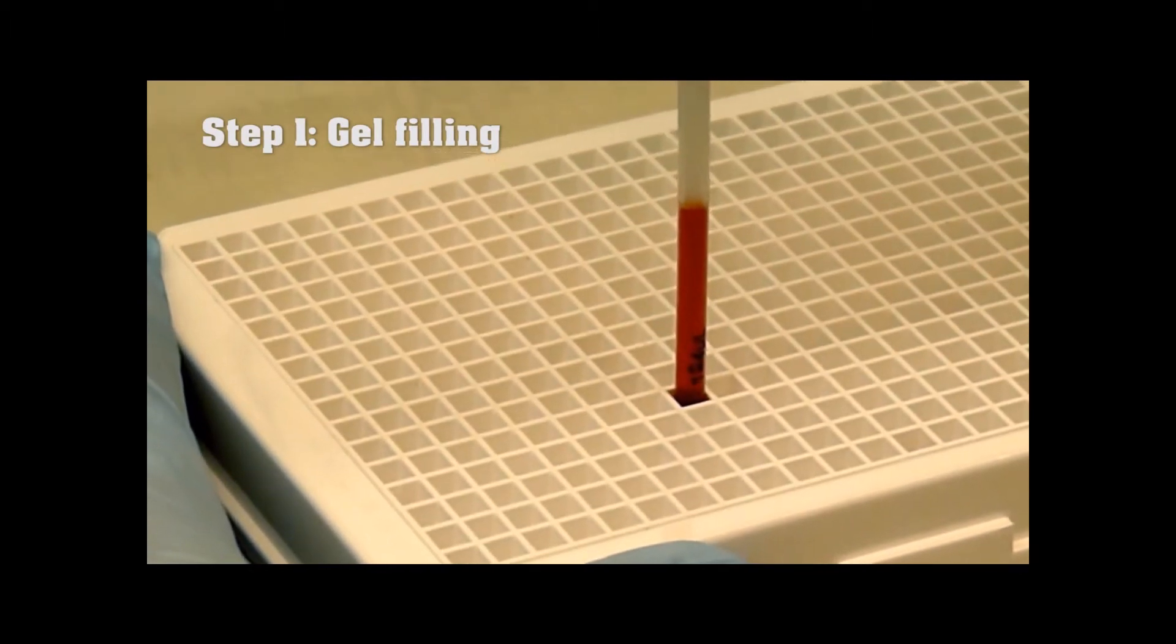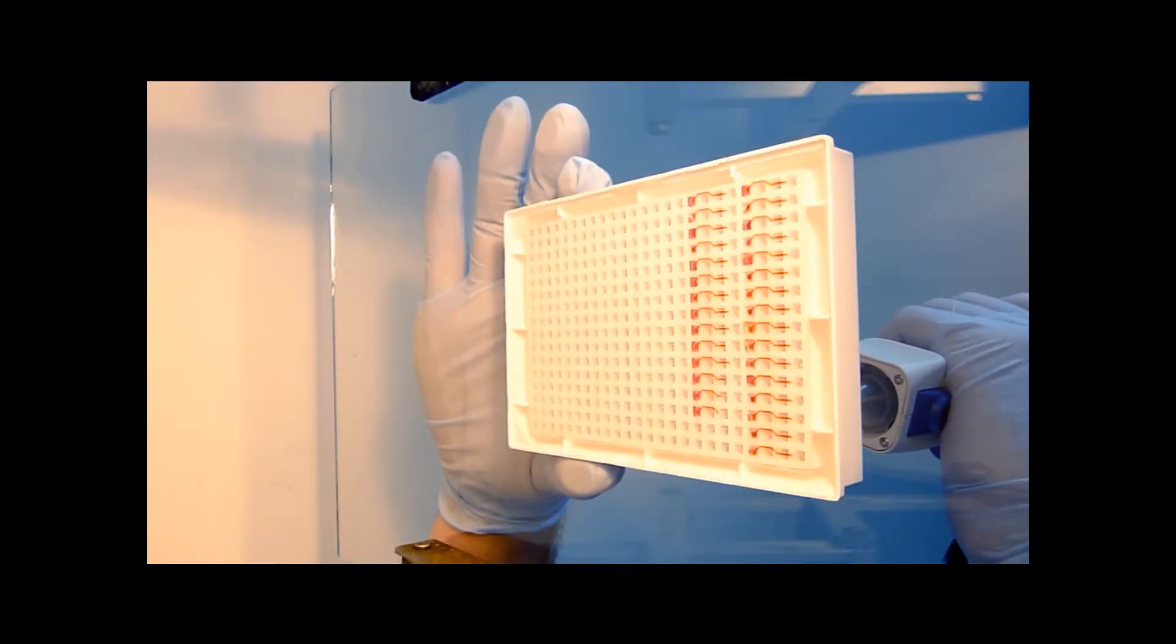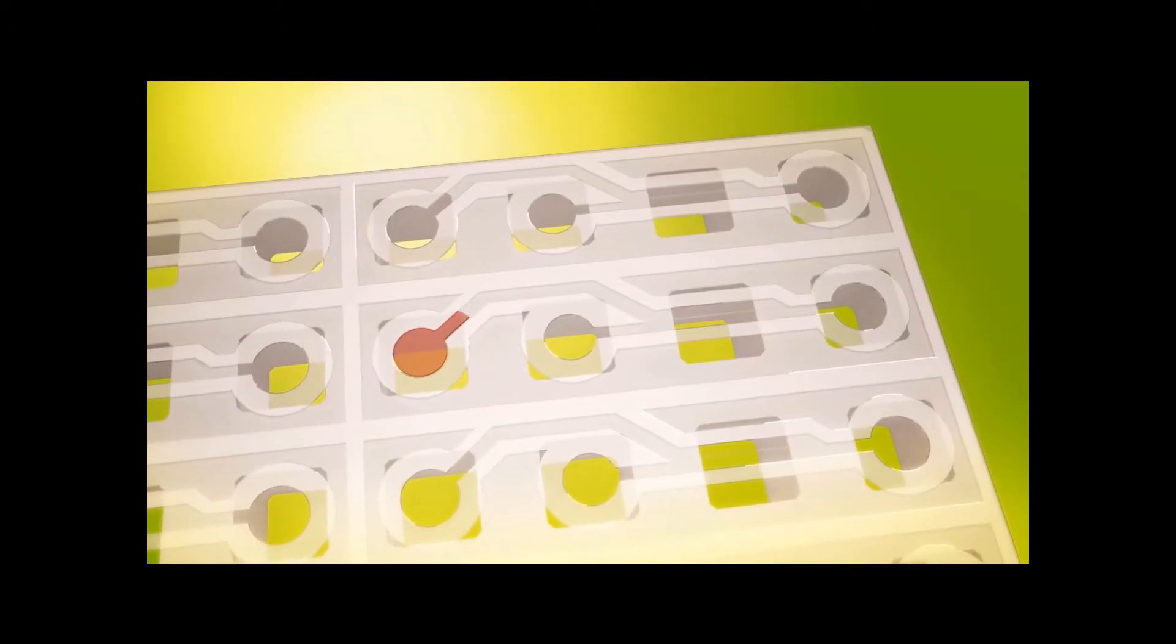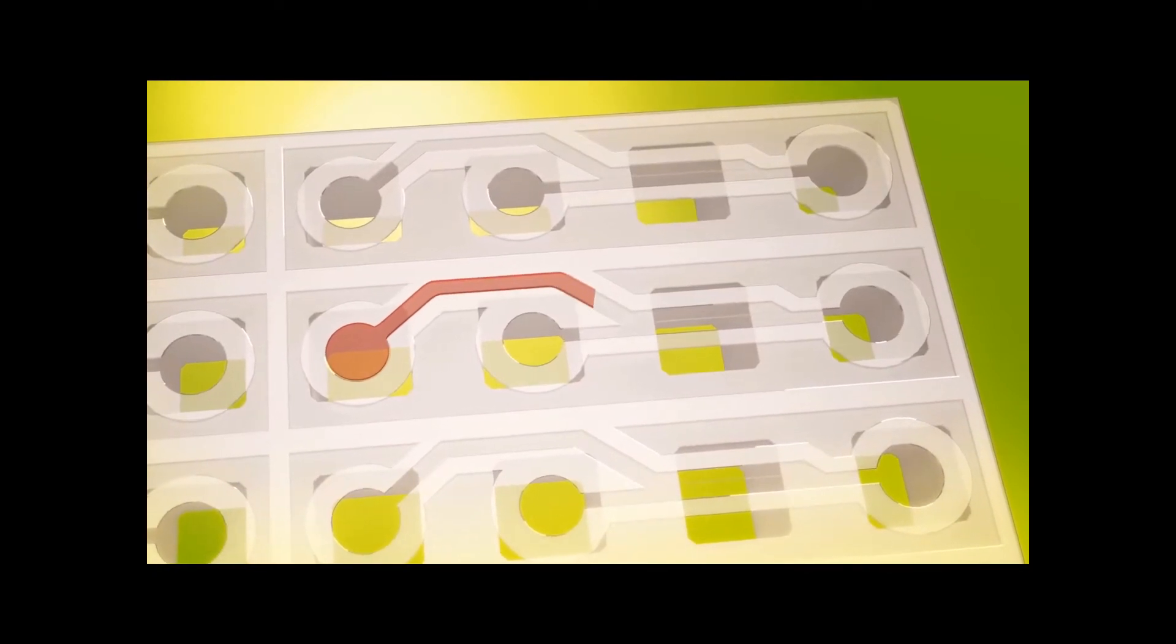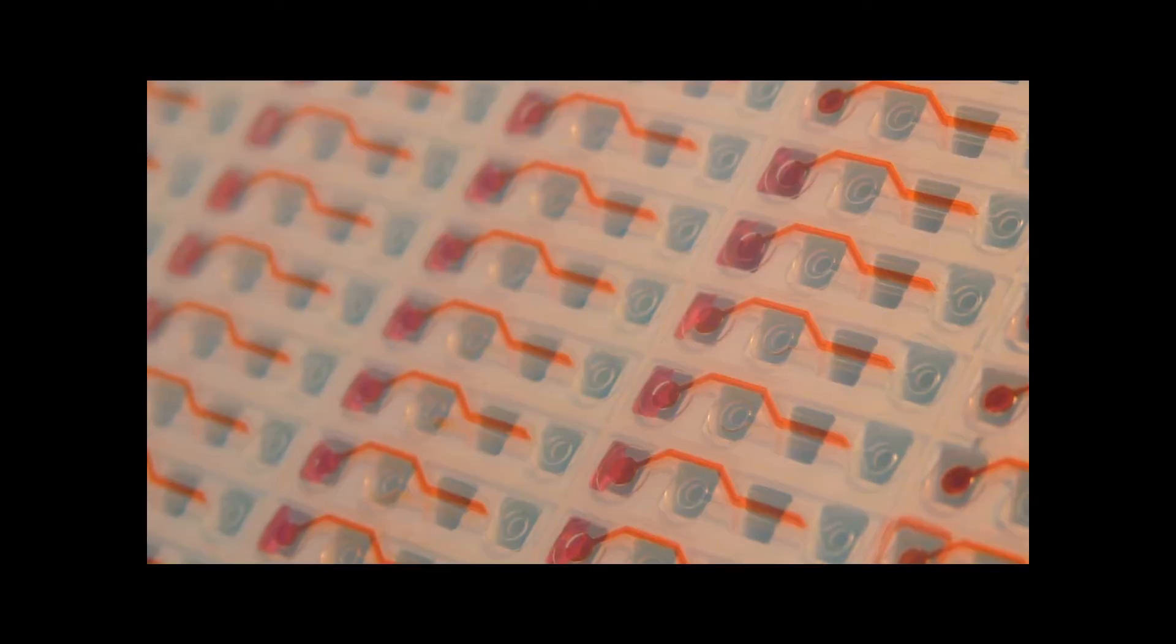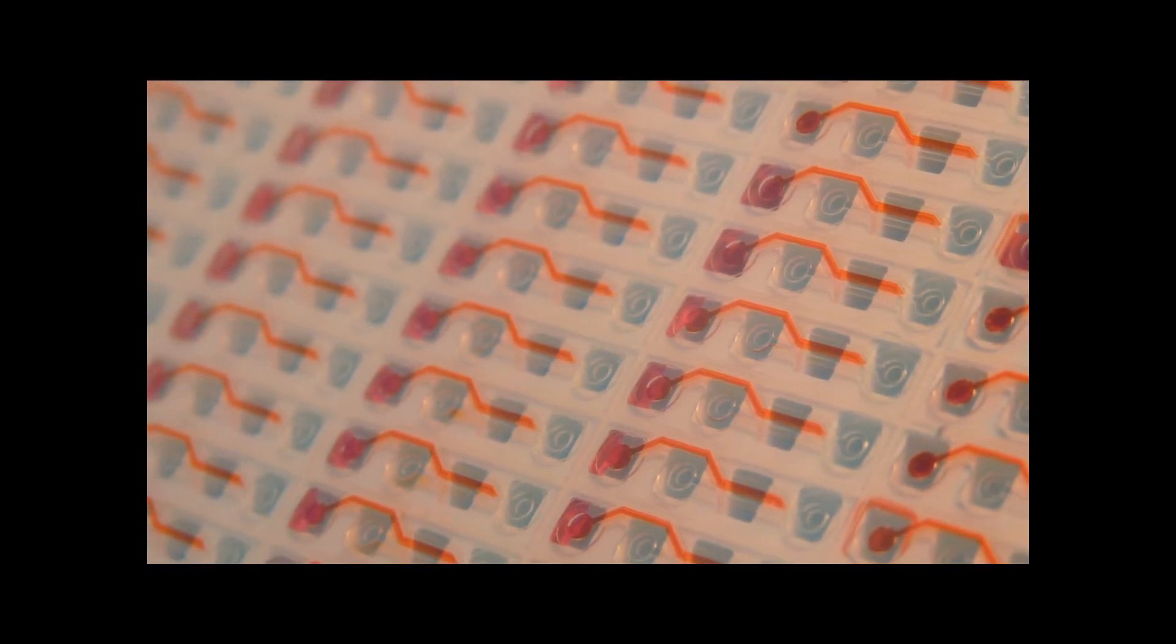Gel is pipetted into the gel inlet and flows into the gel channel by capillary force. A phase guide is present to pattern the gel into its required form. The gel is allowed to gelate, after which a cell suspension is dispensed into the perfusion channel.